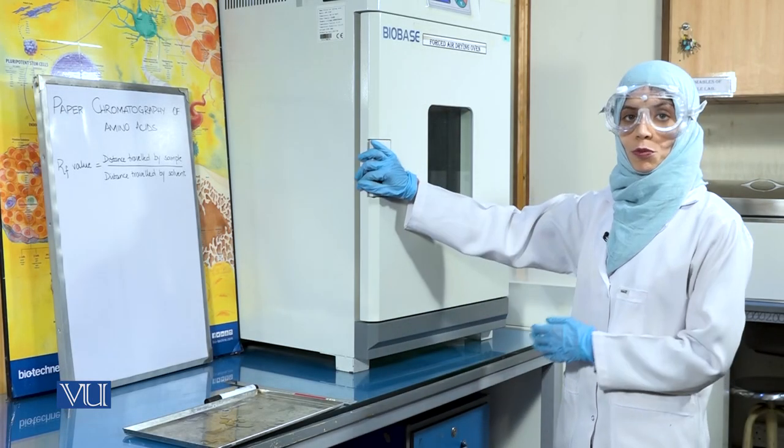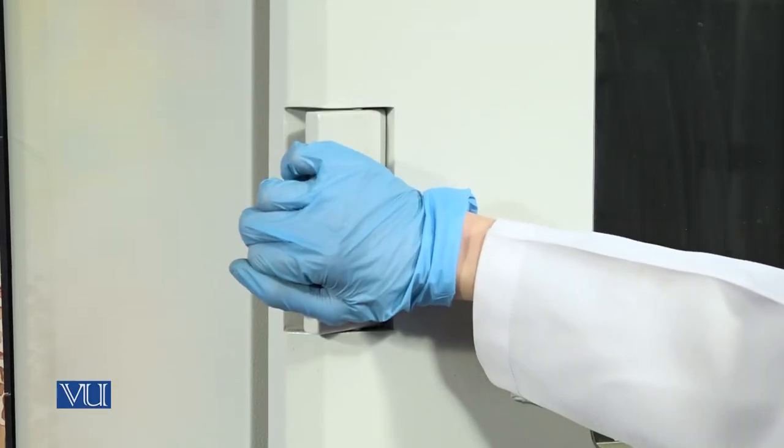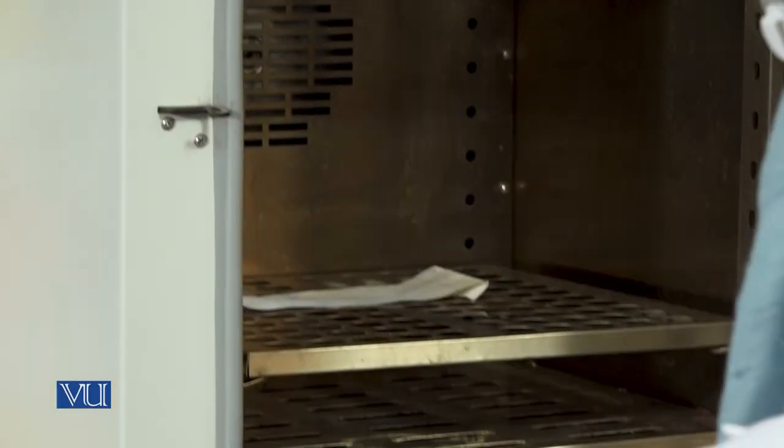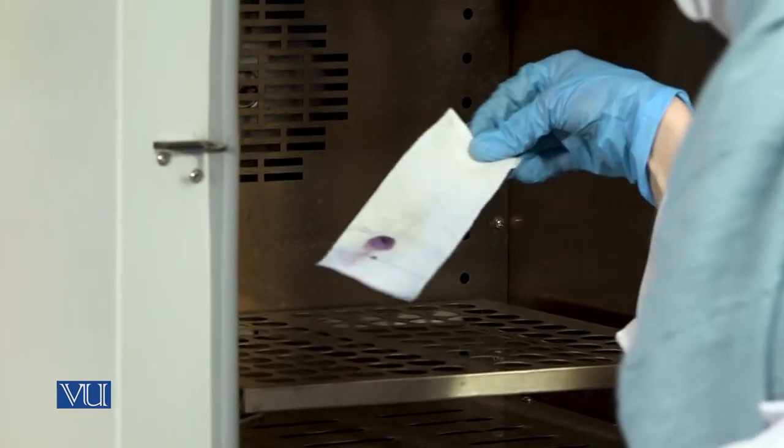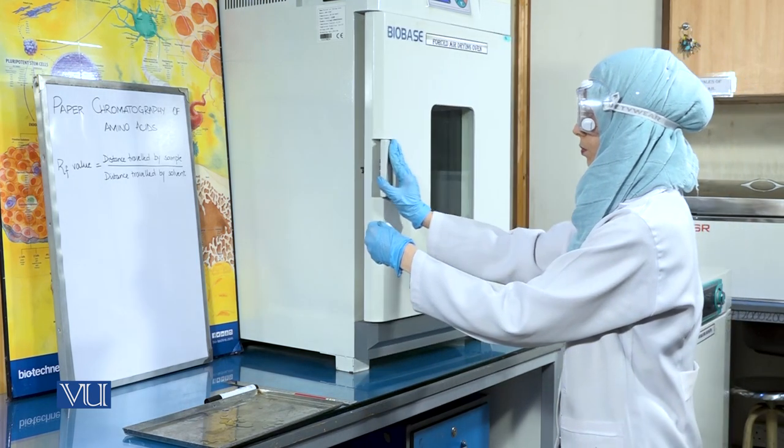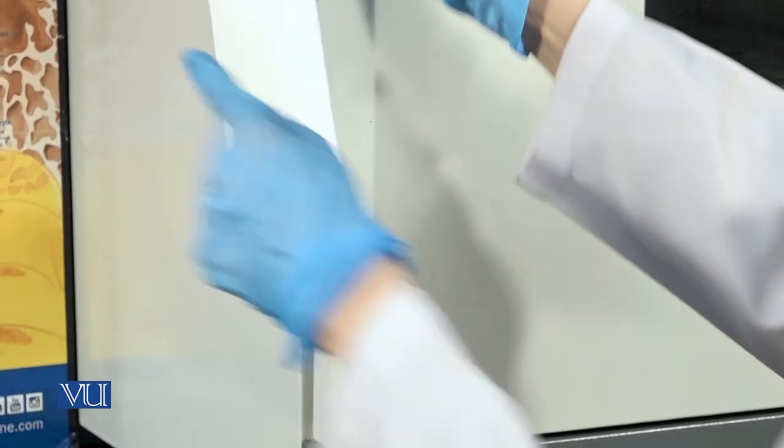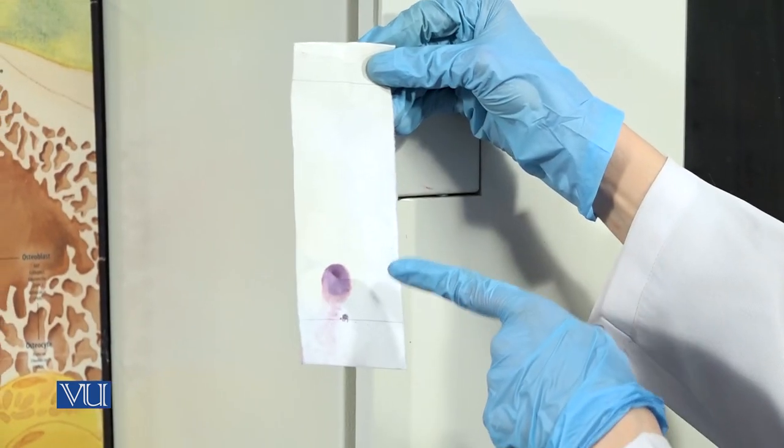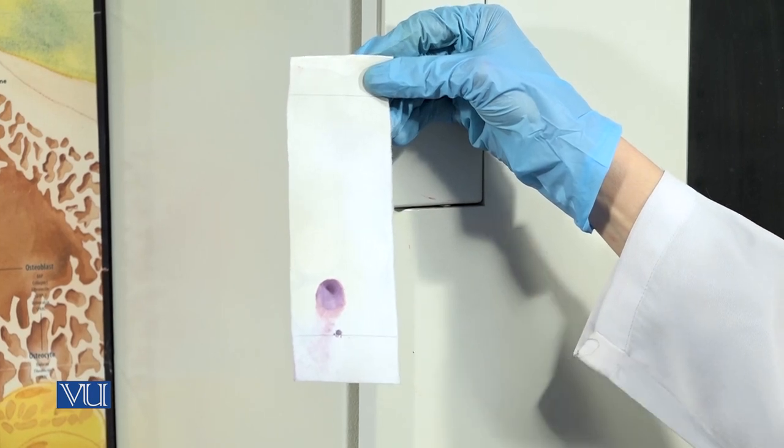After 5 minutes, we will remove this chromatogram from the oven. You will be able to clearly see the spot of the amino acid on the chromatogram.